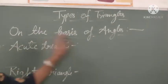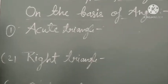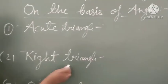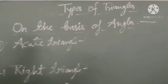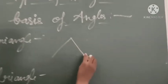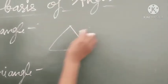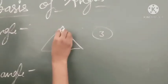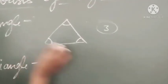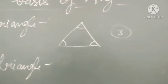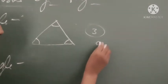Now, on the basis of angles, triangles are also of 3 types: acute triangle, right triangle, and obtuse triangle. For an acute triangle, all 3 angles must be acute angles. An acute angle is an angle which is less than 90 degrees.